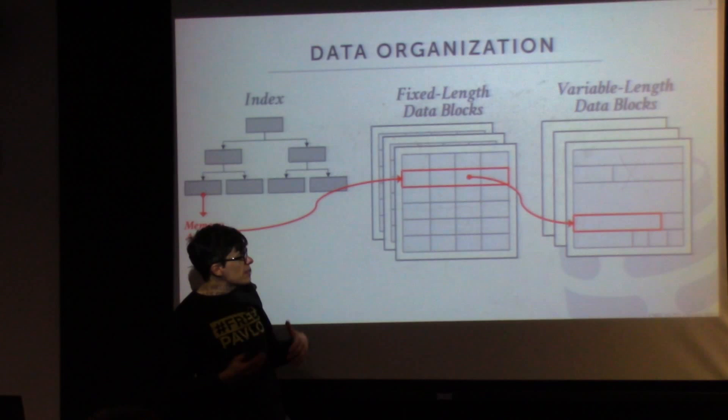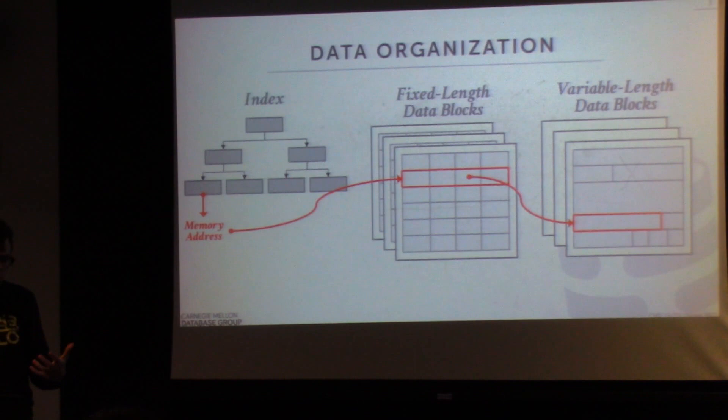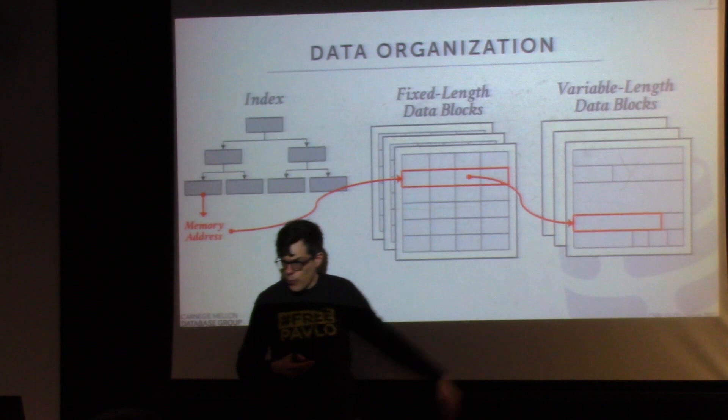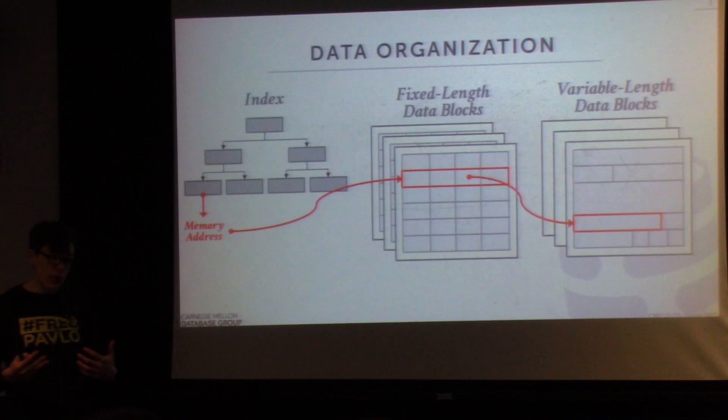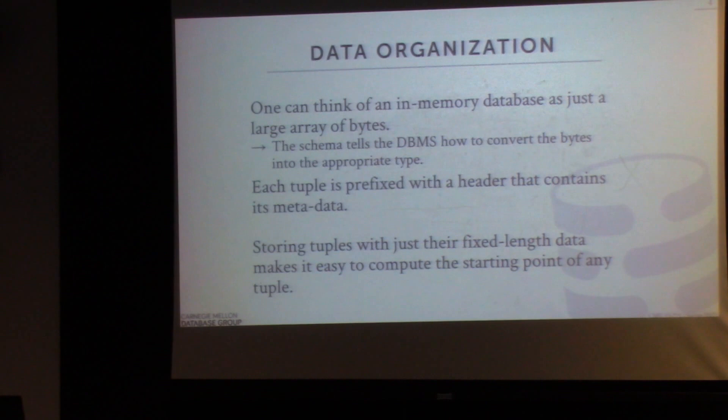For variable-length values, we have a pointer to a block of memory in a variable-length pool. In our current implementation in Peloton, the ephemeral pool is just a wrapper around jemalloc. This is why you're not allowed to write malloc and free in your code — we do all that in the pool. When doing analytical queries on NUMA architectures, it becomes important to know where your memory is, and maybe jemalloc is not what you want.